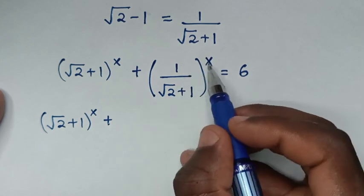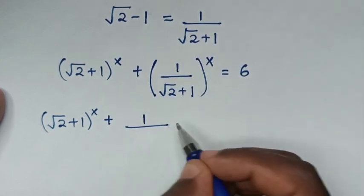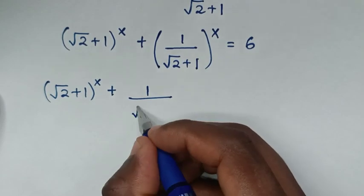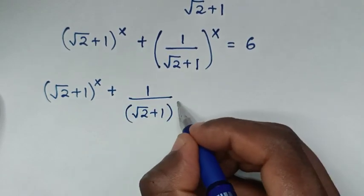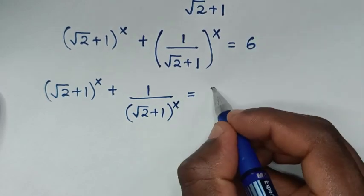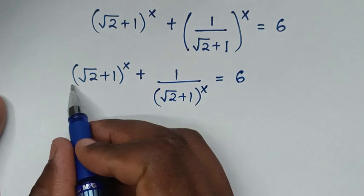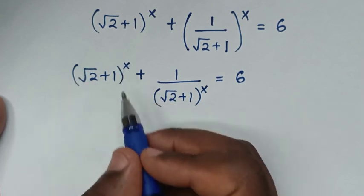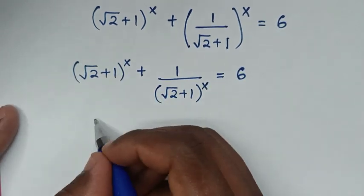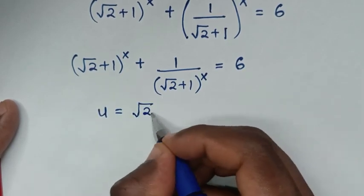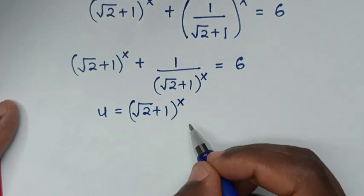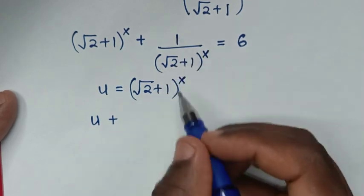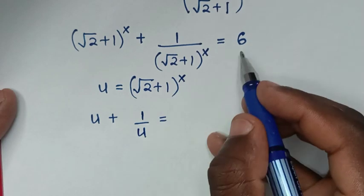Taking x into the power in the denominator, 1 over (√2 + 1)^x, so the equation is (√2 + 1)^x + 1/(√2 + 1)^x = 6. Now, (√2 + 1)^x is common. Let u = (√2 + 1)^x. So the equation becomes u + 1/u = 6.